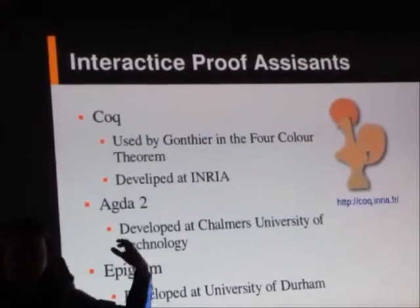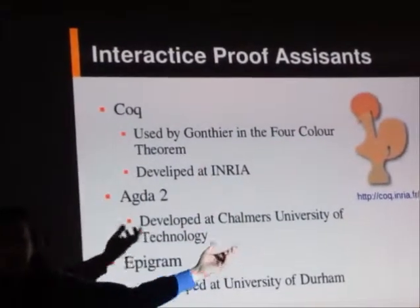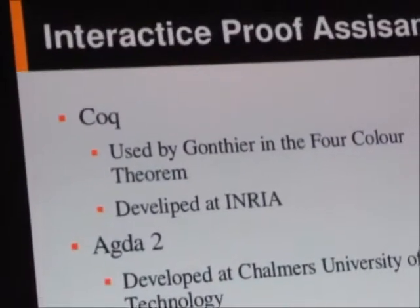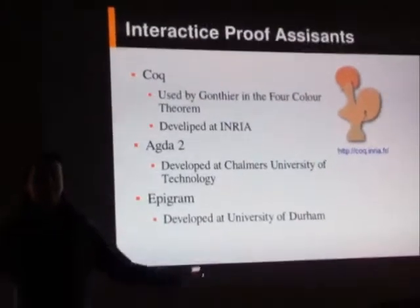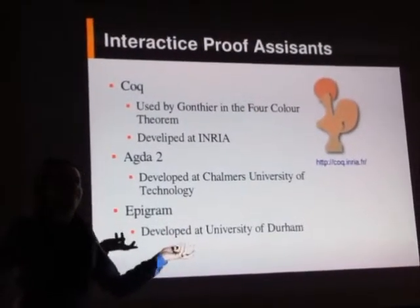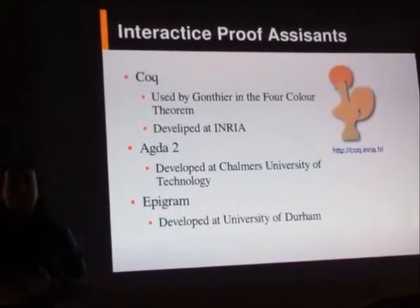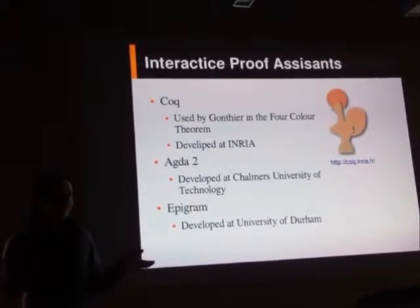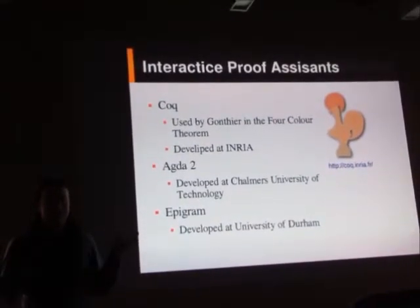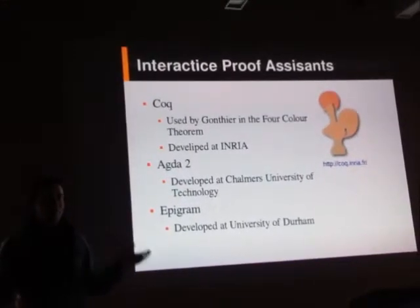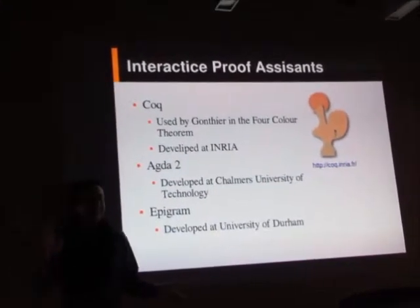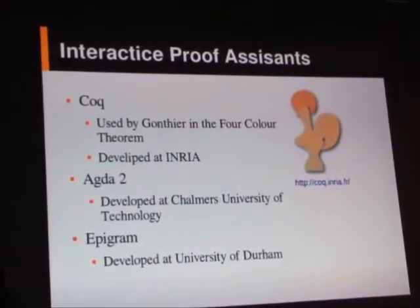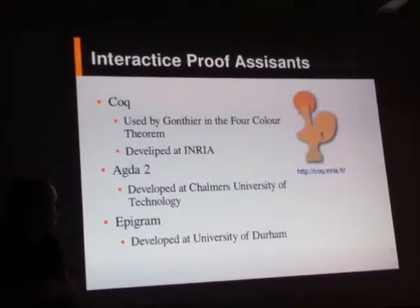The proof required a case analysis of 4 million cases in software. They ran the program and it returned true, so they concluded it was good. But some people were unsatisfied with that, because sometimes people make mistakes when writing software — so just because the program returned true, what does that really mean?